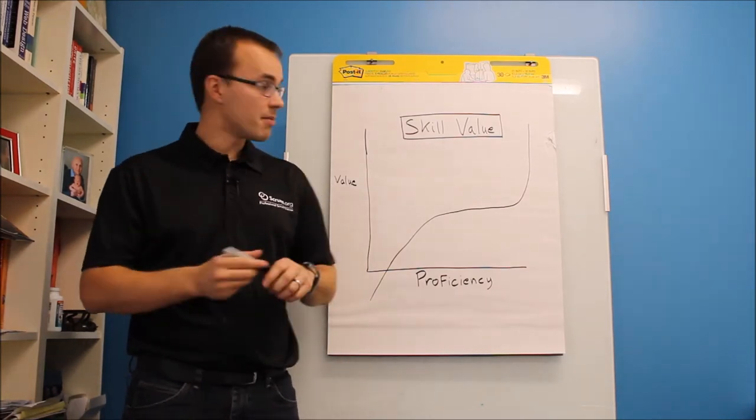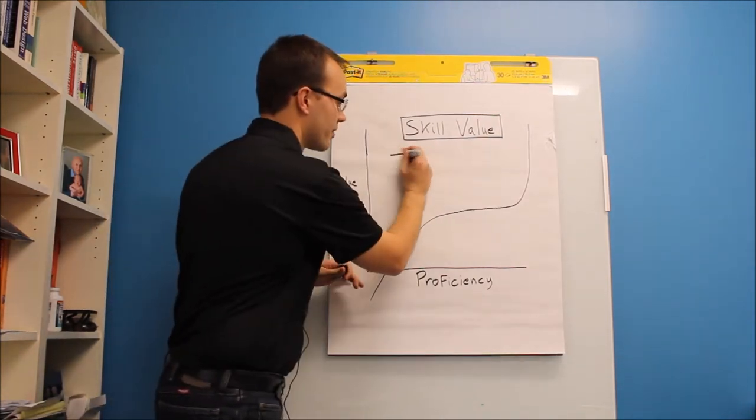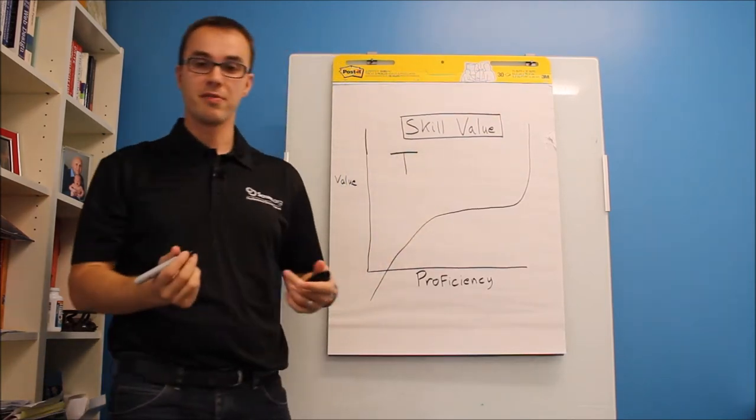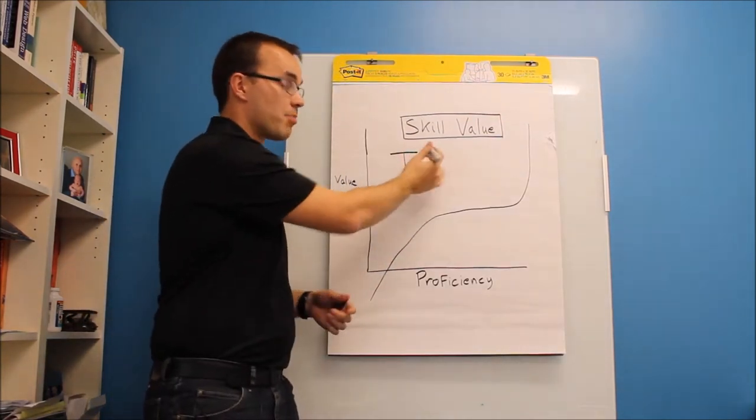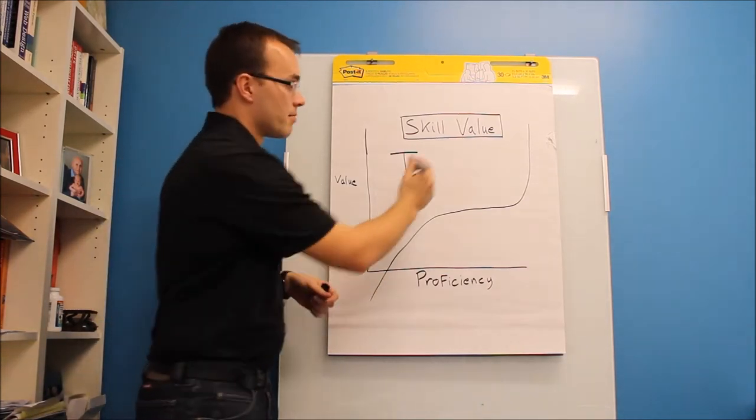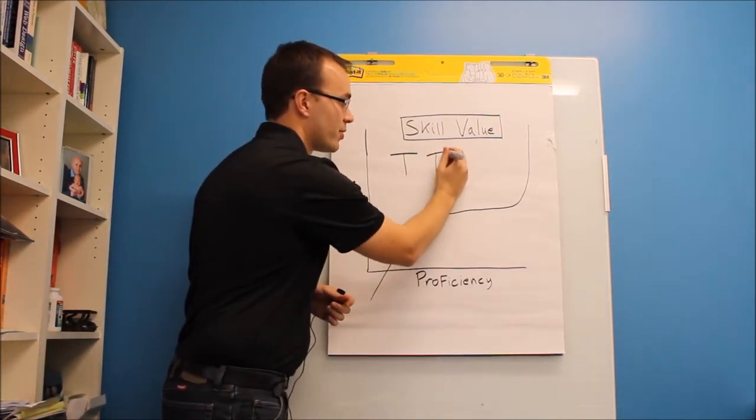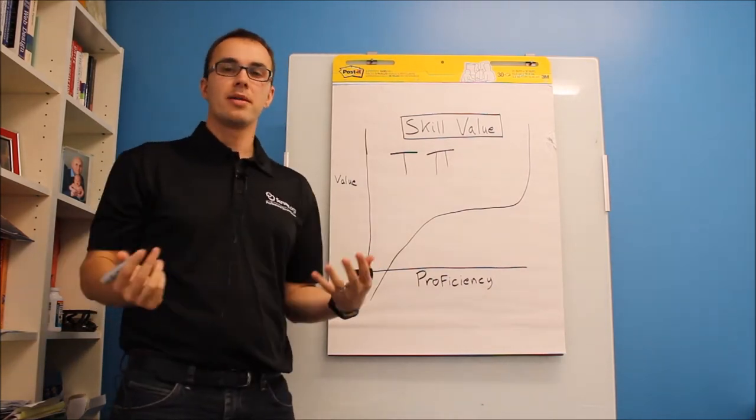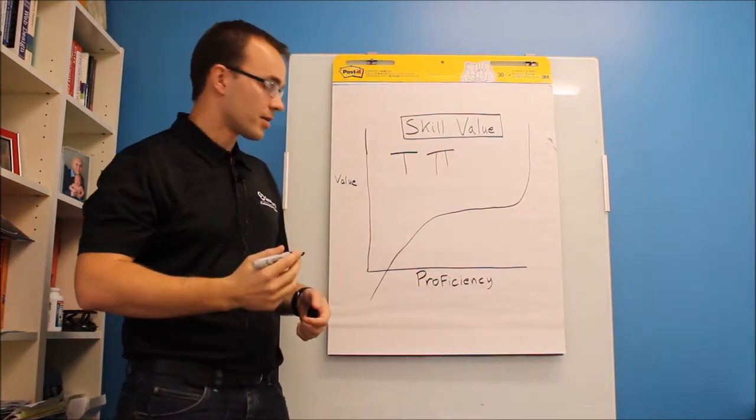Many of you have heard of T-shaped people, right? We want to develop T-shaped individuals who have a breadth of knowledge and kind of a specialization in one area. Maybe you've heard of pie-shaped people who have a little bit more in two areas. But why does this matter? Let's take a look at this.